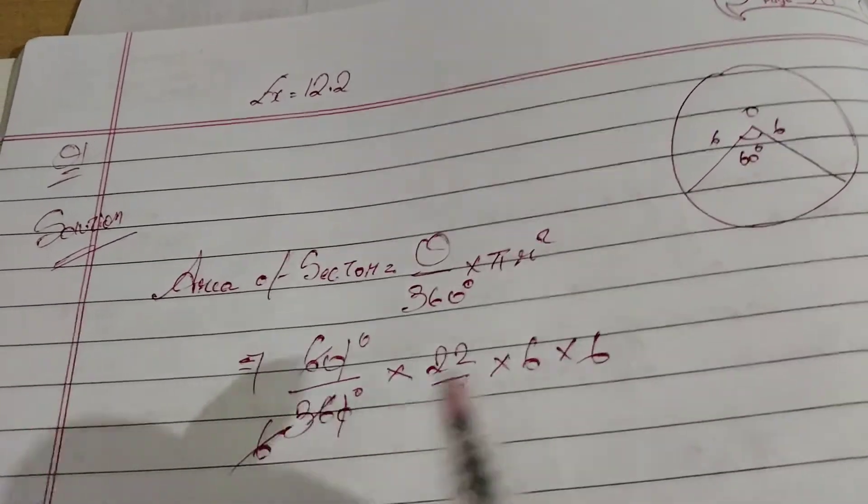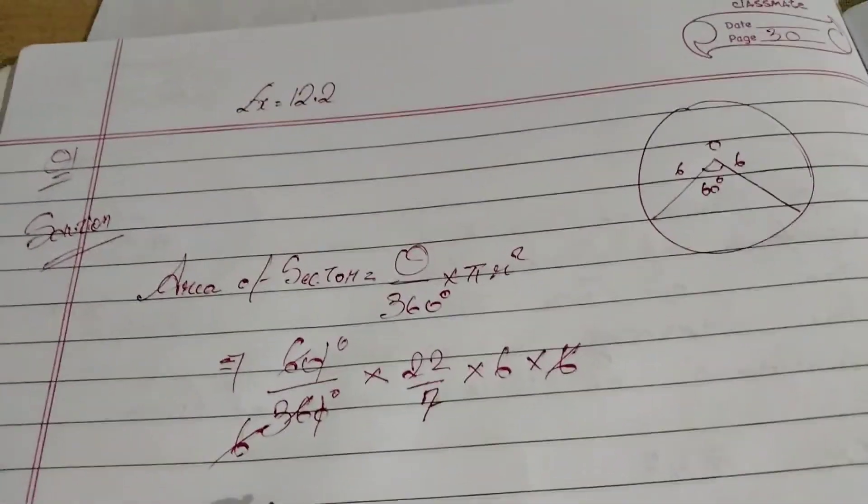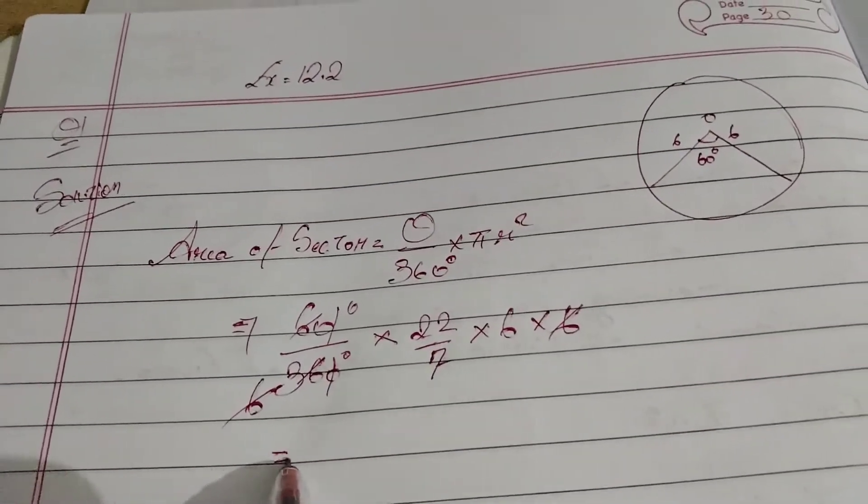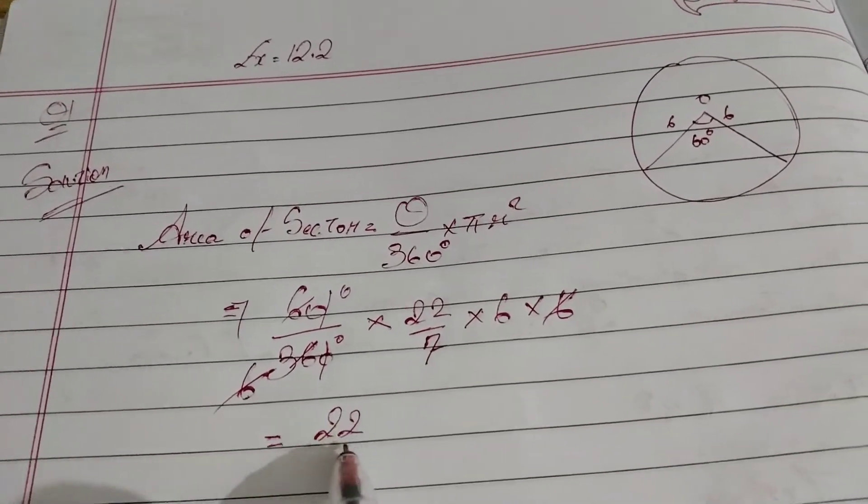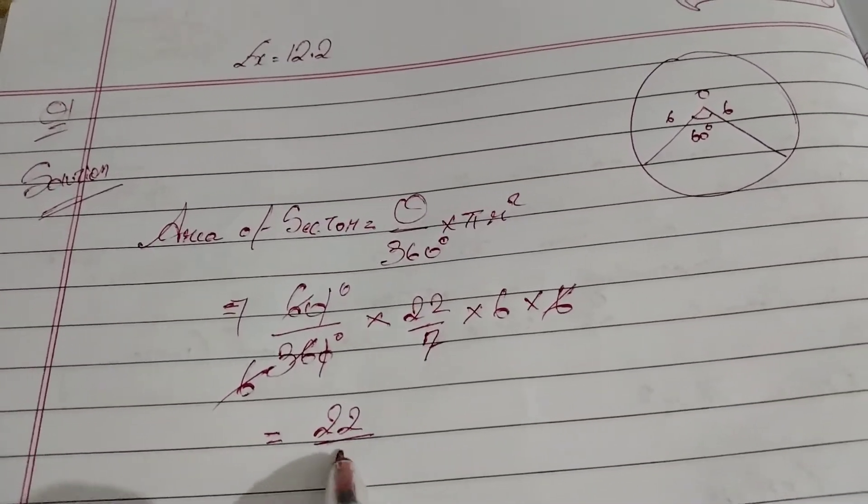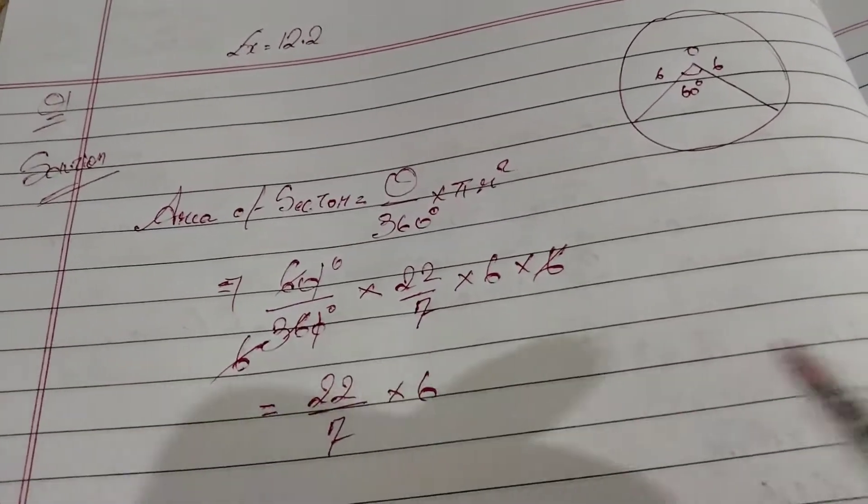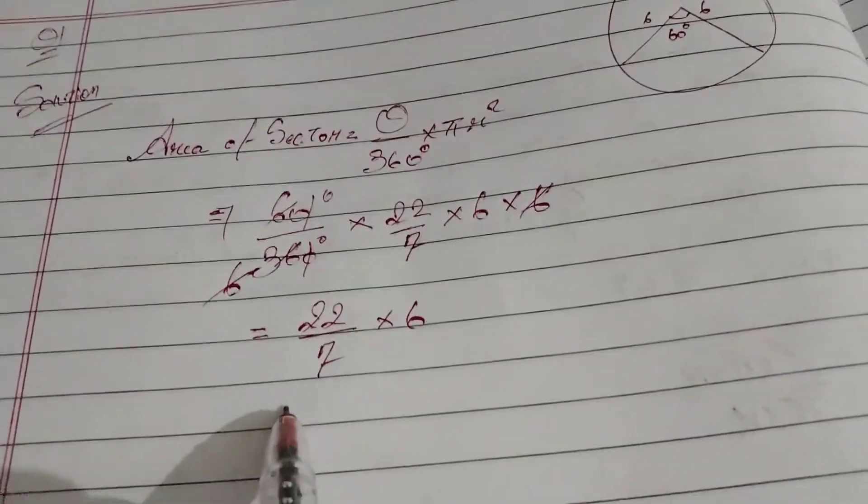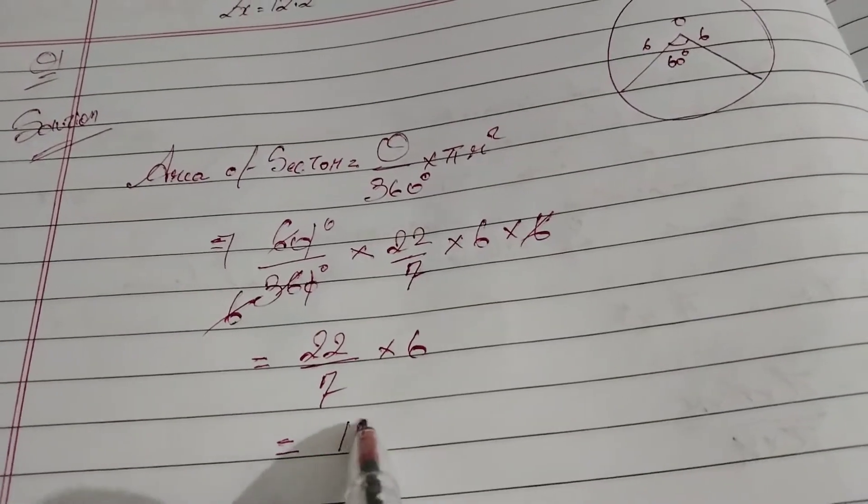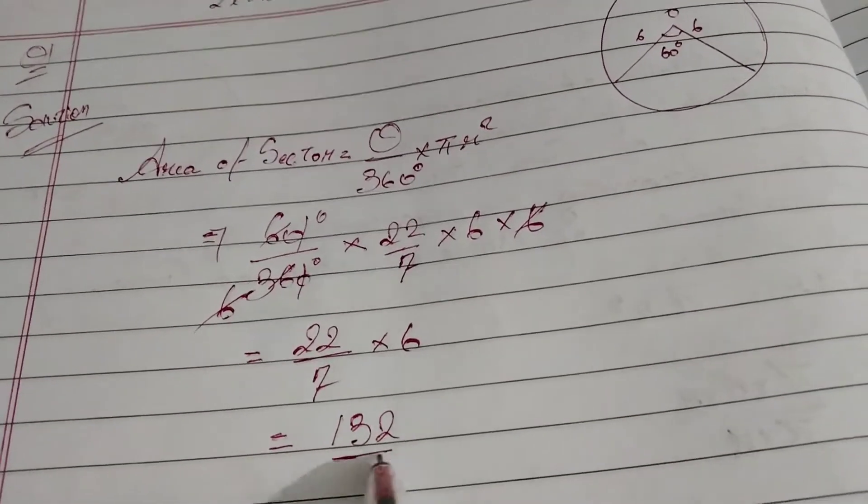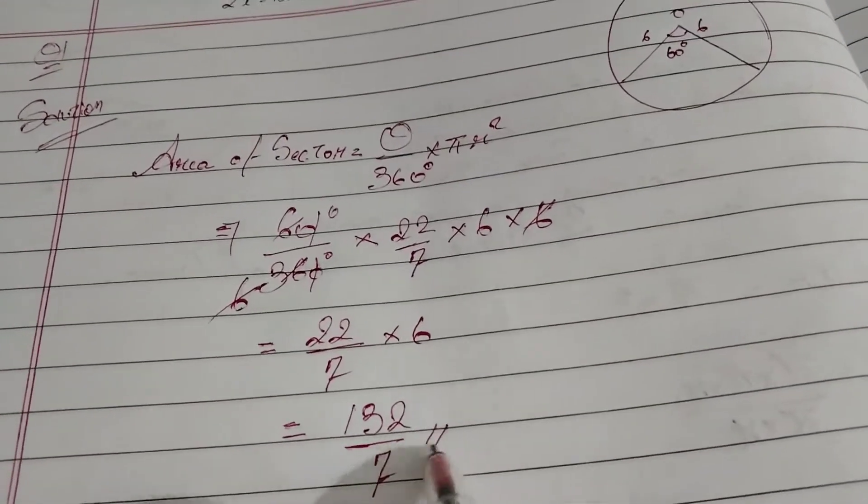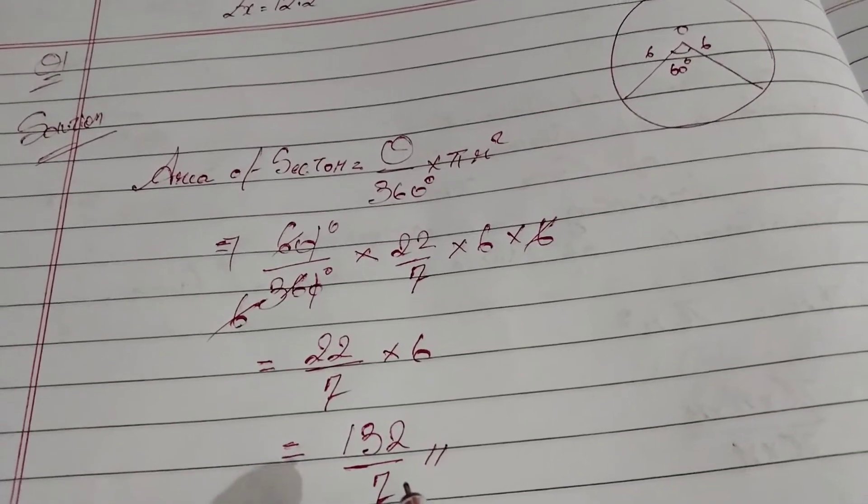And 6 and 6 cancel, so what is remaining? The remaining is 22 by 7 into 6. So 6 and 22 if you multiply you'll get 132 by 7. With this we have completed...